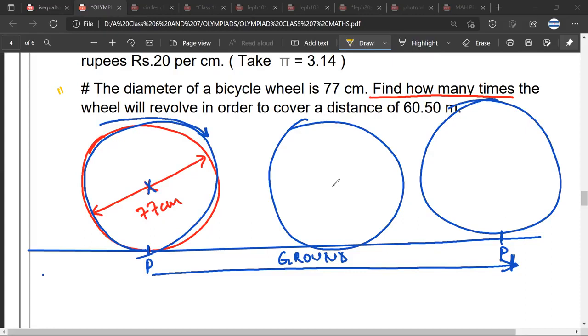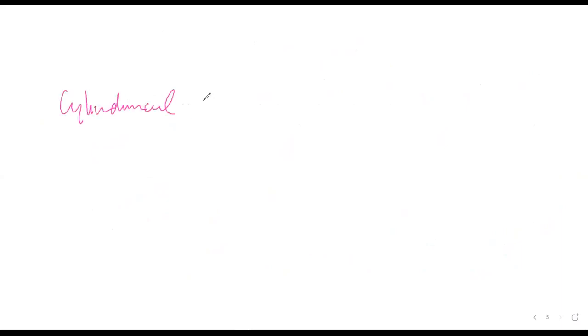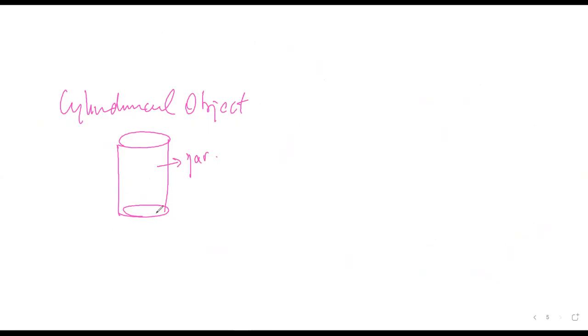Mr. Satya, have you understood or should I explain more? Can you explain? So, what you can try to do is an activity at home. For example, you take any cylindrical object — for example, any jar which is cylindrical in shape, something like a talcum powder container which usually comes in a cylindrical shape. Have you understood? Yes sir.